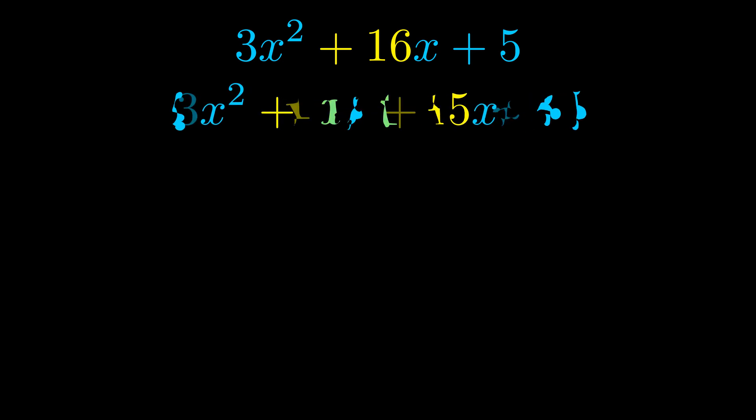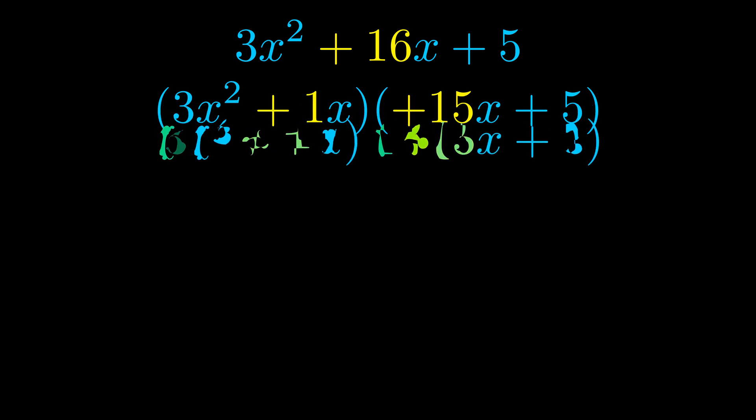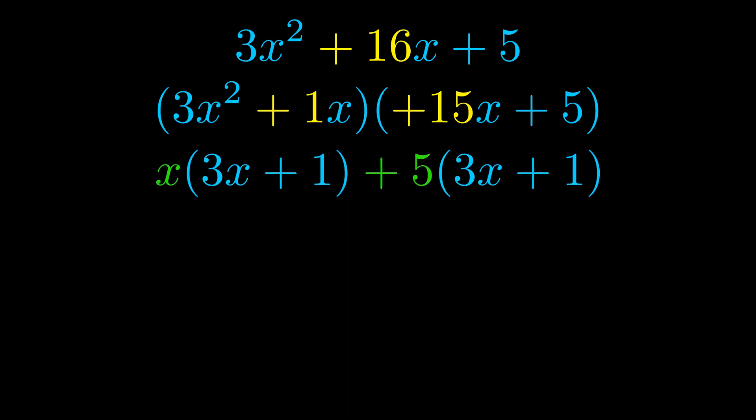Once we've done this, we go ahead and we put parentheses around the first term and the last term. And we do that so that we can take the greatest common factor out of both terms. We can see the greatest common factor is now outside in green.